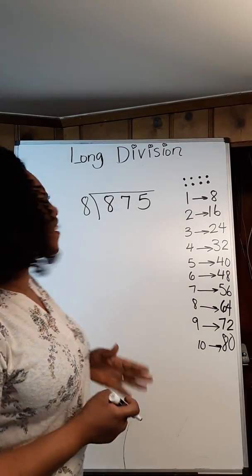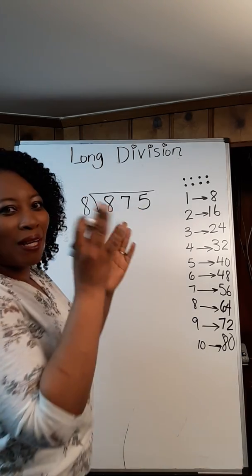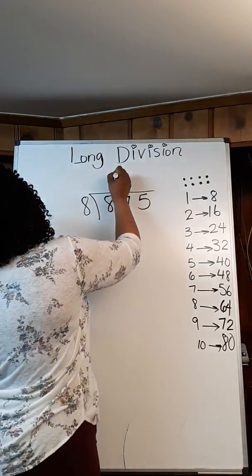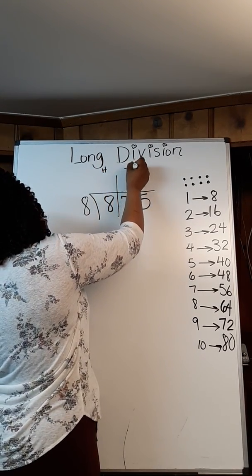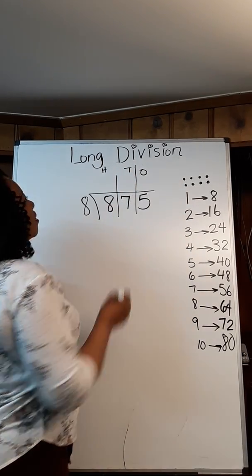Now let's go ahead and start. Remember I told you to place the line to separate the place value. We're going to do it here as well. I'm going to place H for 100, T for 10s, and O for 1s.